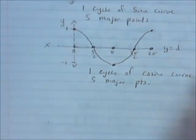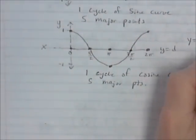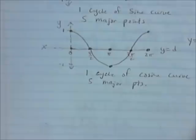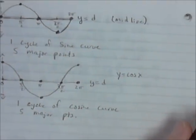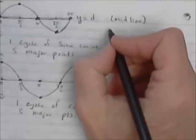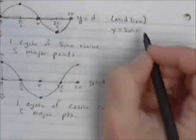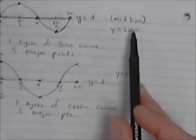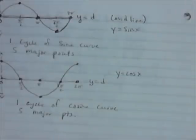So that's just a standard curve. This is y equals cosine of x — a is 1, b is 1, c is 0, and d is 0. And up here, this is y equals sine of x. Again, a is 1, b is 1, and c and d are both 0 because it hasn't been shifted at all.